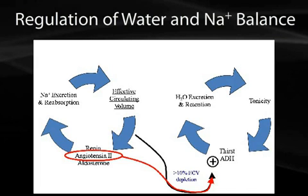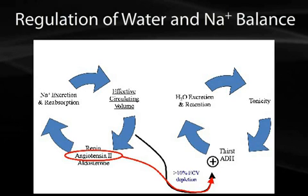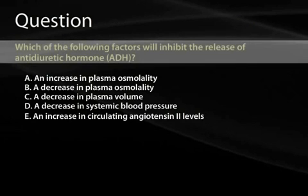Effective circulating volume is primarily governed by the renin-angiotensin-aldosterone system. With minor changes in effective circulating volume, renin-angiotensin-aldosterone activity is regulated. However, when there is a greater than 10 percent fall in effective circulating volume, the body attempts to preserve circulating volume by stimulation of ADH as well. Normally, ADH is only governed by body osmolality. Angiotensin 2 plays a direct role in this crosstalk, as angiotensin 2 directly stimulates ADH release.